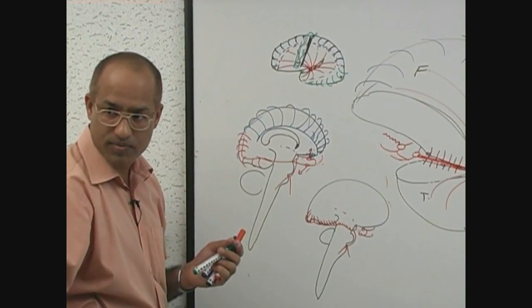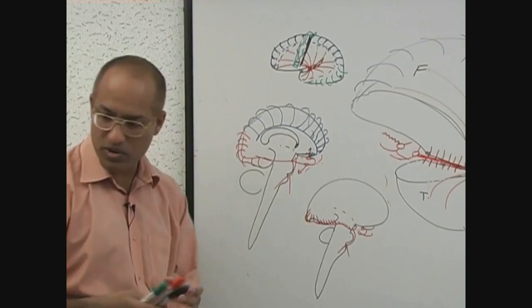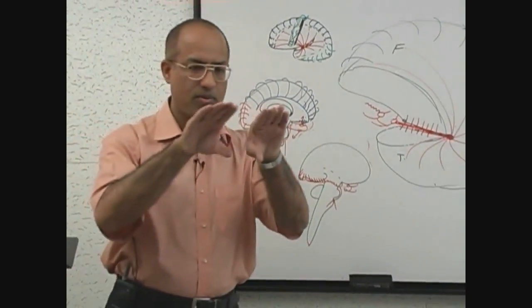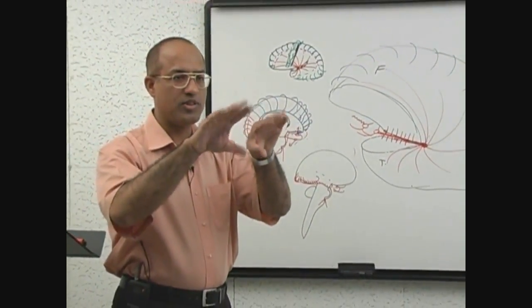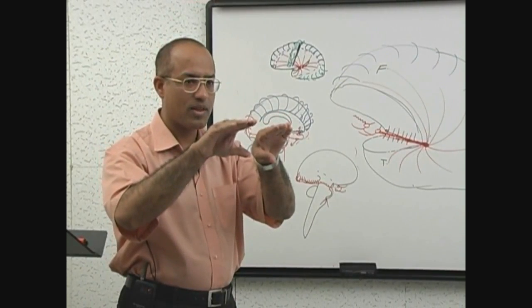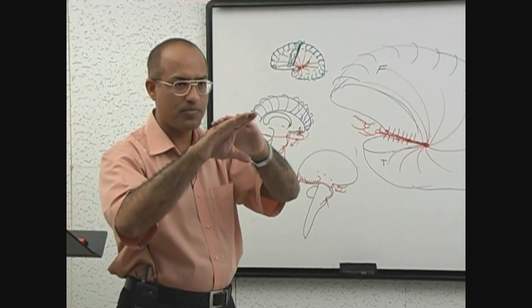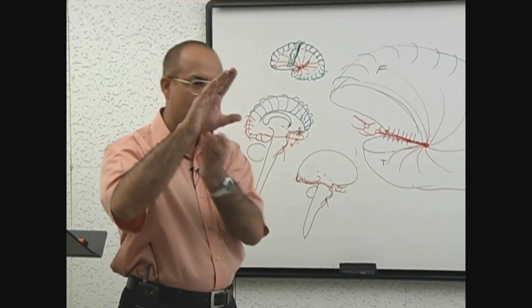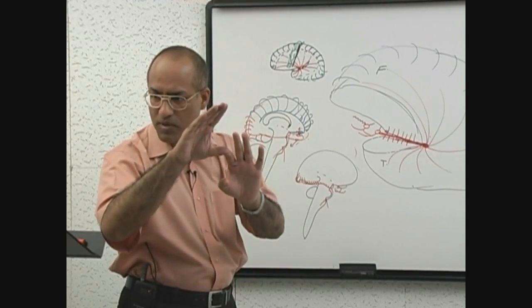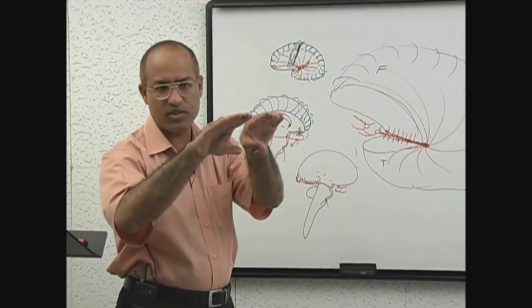You should understand it clearer. Look, these are two hemispheres. What is this? Frontal lobe, frontal lobe, parietal lobe, occipital lobe, temporal lobe. Are you clear about it? This is one hemisphere, this is the other hemisphere.